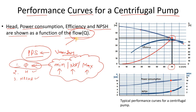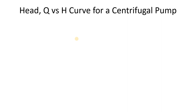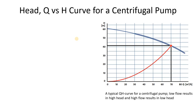When you select the right flow rate, that is the first step toward selecting the right pump. Now let's discuss the first performance curve: the head versus flow rate curve, also called the H-Q curve. From this picture you can see the Q versus H curve for a centrifugal pump. There is the BEP — the best efficiency point. At a normal flow rate of 70 cubic meters per hour, the head is approximately 42 meters.